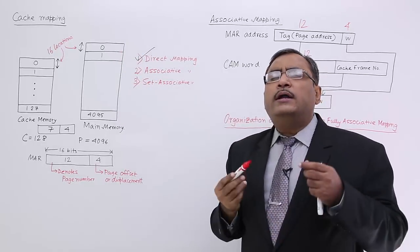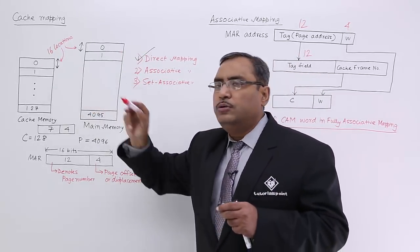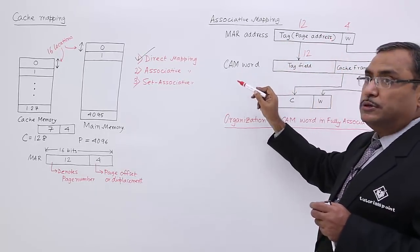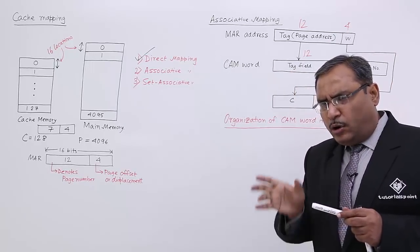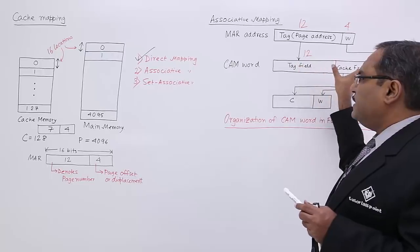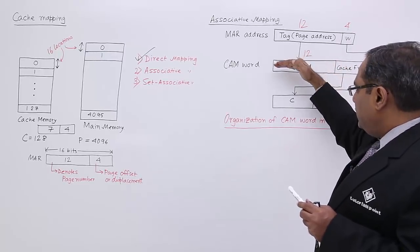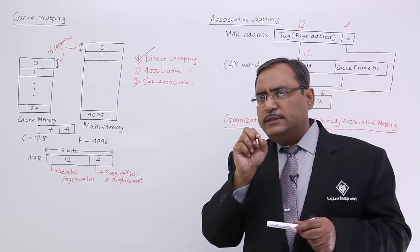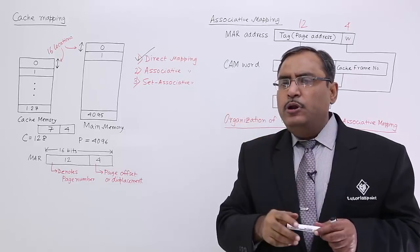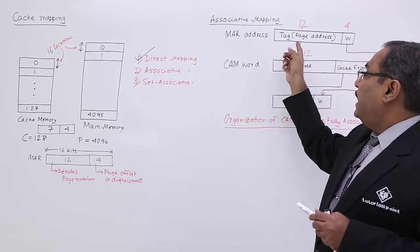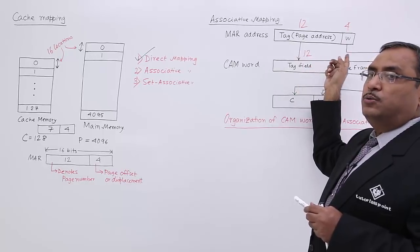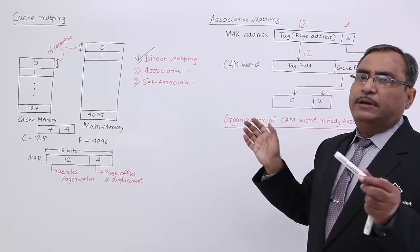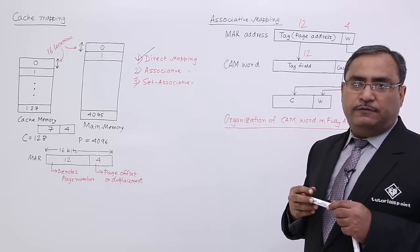Let us suppose I am searching where page number 2000 has got loaded onto the cache memory. Then 2000 will be searched in the CAM. In the CAM, so many locations are there containing the page number and respective frame number. The most peculiar feature of searching in CAM is that CAM will allow parallel searching — very fast searching.